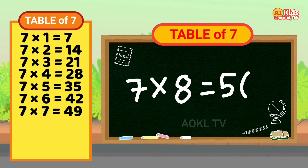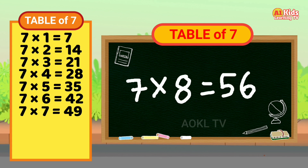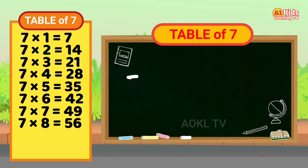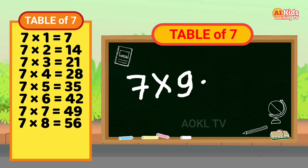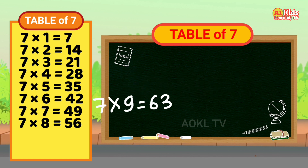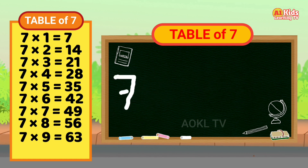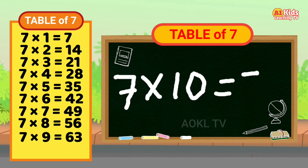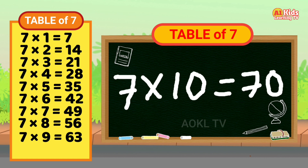Seven eight's are fifty-six. Seven nine's are sixty-three. Seven ten's are seventy.